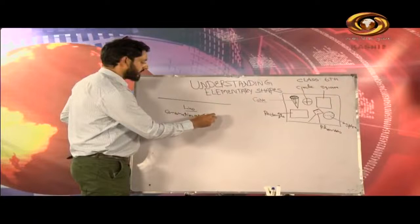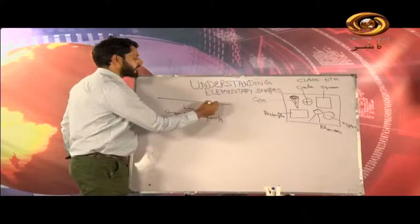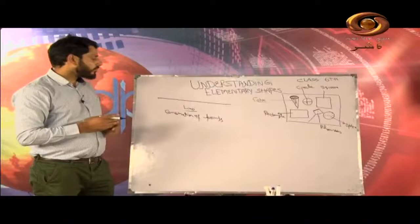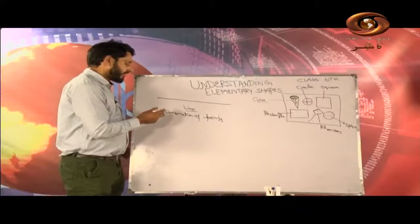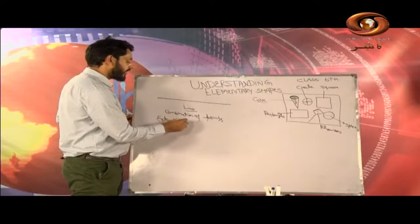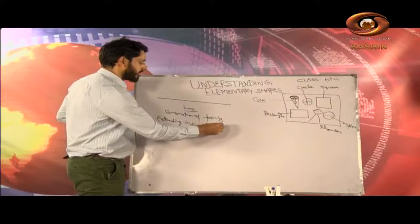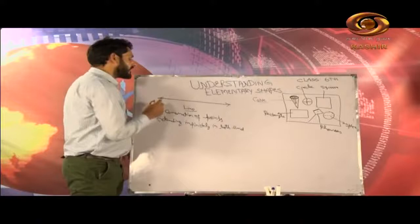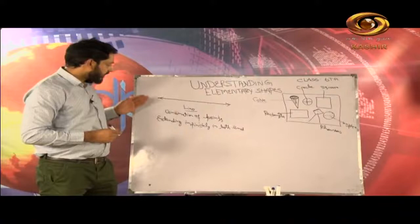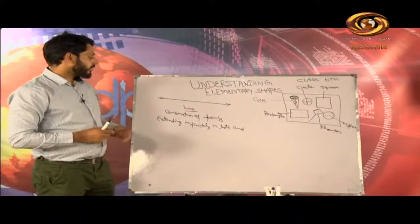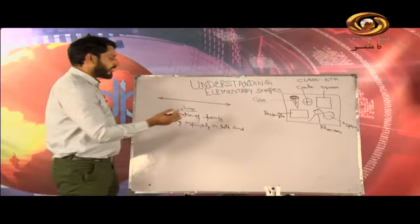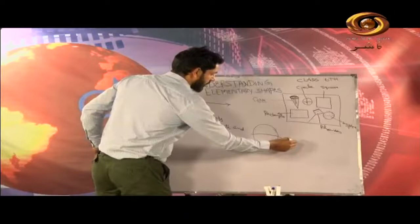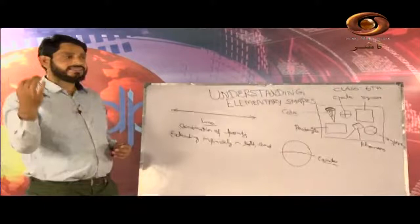This has been created by the combination of points. There are a number of points that are combined together to form a line. How do we define a line in mathematics? A line is defined as extending infinitely from both ends. So, we can say that there is no fixed point as far as the line is concerned — it is extending infinitely from both ends. An example of a line can be the line drawn around the globe, that is, the equator.